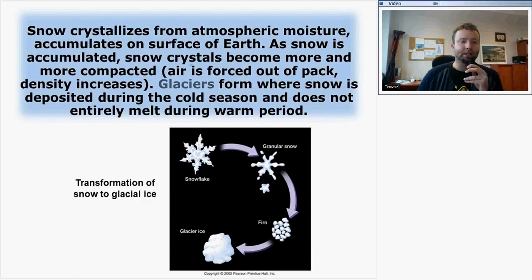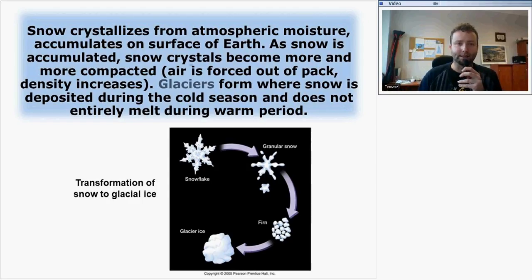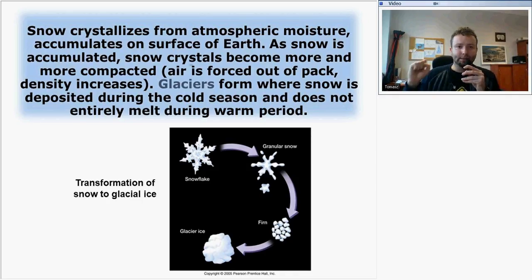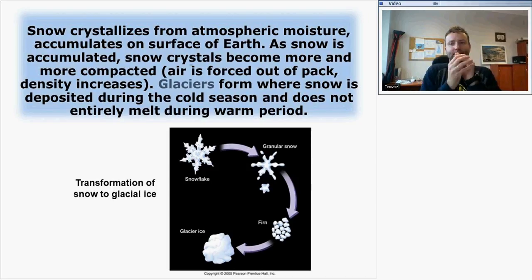From the chart, you can find the transformation of snow to glacial ice. From snowflake to glacier ice: snow crystallizes from atmospheric moisture, falls in the form of snowflakes, and accumulates on the surface of Earth. As snow accumulates, snow crystals become more and more compacted because of the layers from above. These snow crystals are compacted so the air is forced out from the pack, and its density increases. If you prepare a snowball, you will also compact the snow — you just push out the air from the pack.